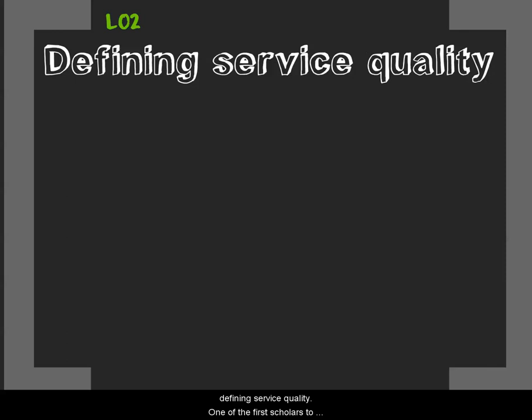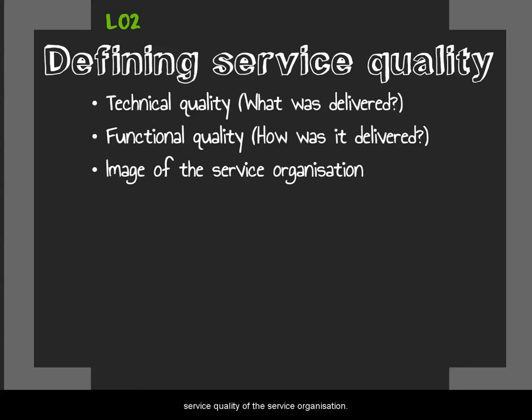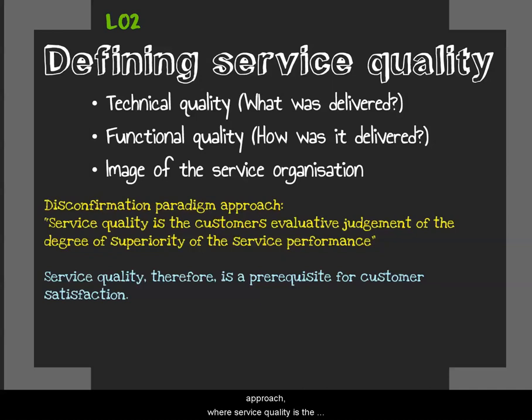One of the first scholars to attempt to define service quality was Christian Gronruss. His definition implied that the quality of a service can be determined by three variables: first, the technical quality — what was actually delivered; next, the functional quality — how it was delivered; and lastly, the image of the service organization. These three things together define service quality. There was also the disconfirmation paradigm approach, where service quality is the customer's evaluative judgment of the degree of superiority of the service performance. For more detail on this approach, see page 39.